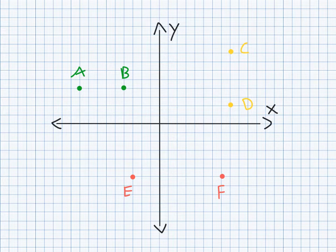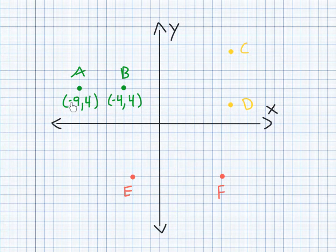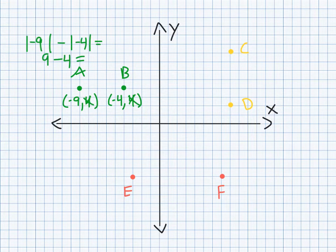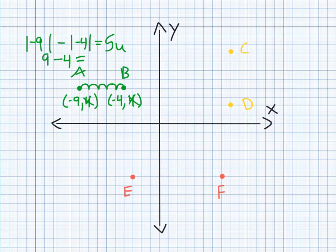Okay, so for A and B, we have the points negative 4, 4 for B, and negative 9, 4 for A, which makes our y coordinates the same, and therefore we can cross them out. So we're looking at the distance between negative 9 and negative 4. Are we crossing 0? So our formula would be the absolute value of negative 9 minus absolute value of negative 4, which is just 9 minus 4, giving us a distance of 5 units. So we double check, and we will just count our units. 1, 2, 3, 4, 5. So that worked out.